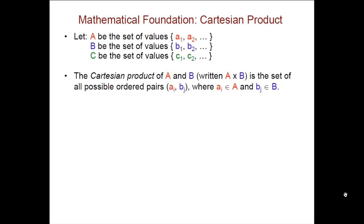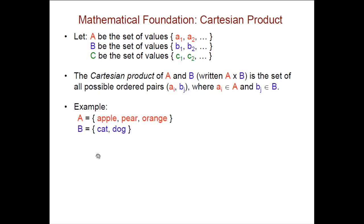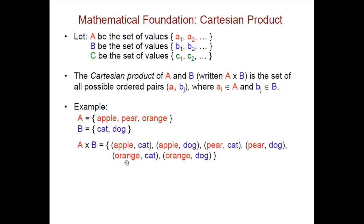If we have sets of values A, B, and C, and we want to take two of them and form their Cartesian product using an X symbol, that gives you the set of all possible ordered pairs in which the first element comes from the first set and the second element comes from the second set. For example, if set A is apple, pear, orange and set B is cat, dog, then the Cartesian product of A and B is this set of ordered pairs.